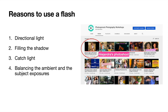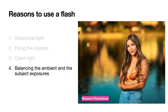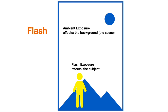Today I want to do a recap of using an off-camera flash to balance the ambient and the subject exposure. Mastering this technique will help you create dramatic portraits. Whenever you add a flash, there will be two exposures: the ambient exposure and the flash exposure. The ambient exposure affects the brightness of the background, whereas the flash exposure affects the brightness of the subject. The ambient exposure is controlled by the combined effect of the ISO, aperture, and shutter speed.